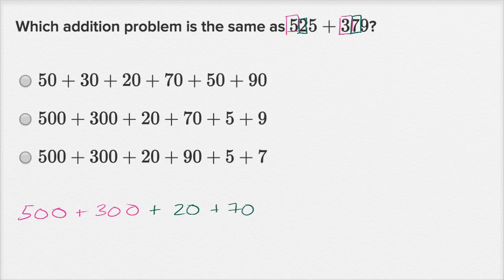And then last but not least, we have a five in the ones place. So that's just going to be five. And then we have a nine in the ones place. So that's just going to be equal to nine. So which of these choices is the same as what I just wrote over here?